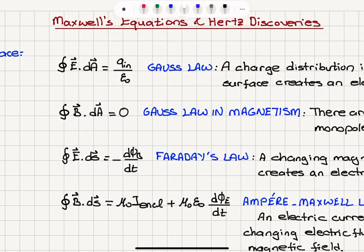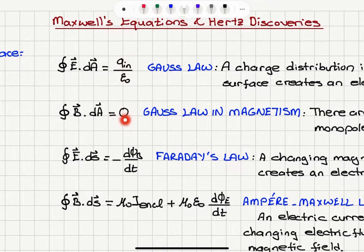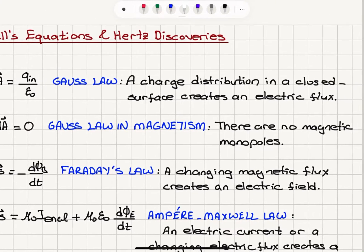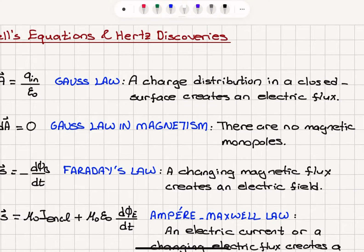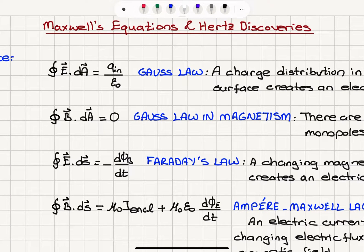The magnetic flux in a closed surface — the B dot dA integral — is actually zero. This would normally have magnetic charge on the right-hand side, but Gauss's law in magnetism says there are no magnetic monopoles. North and south poles always come in pairs; it's impossible to isolate magnetic monopoles.